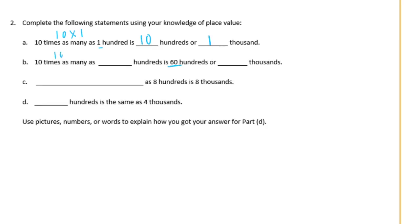So 10 times what would get us 60? That would be 6. So 10 times 6 hundreds is 60 hundreds. And 60 hundreds would be equal to 6 thousands, because we need 10 hundreds to get us 1,000. And if there's 60 of them, that's 6 times as many. So 6 thousands.